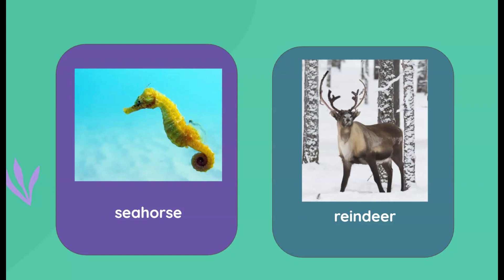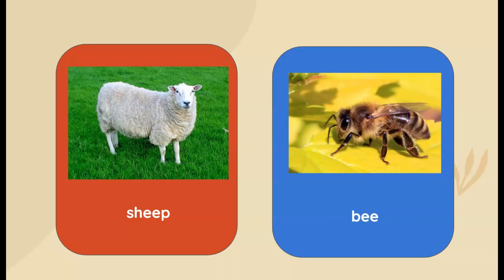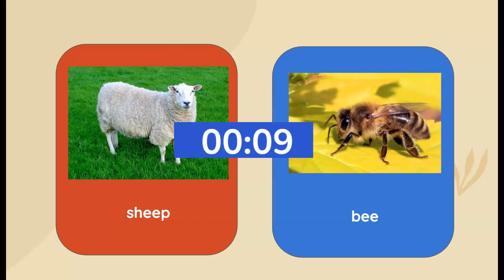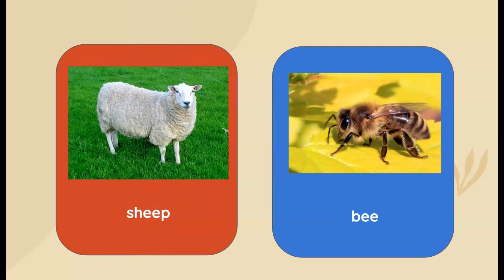It is the reindeer! Which one is the mammal here — is it the sheep or the honey bee? It is the sheep! The honey bee, on the other hand, is an insect.